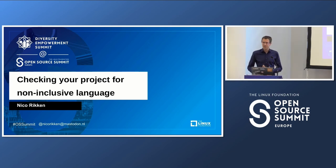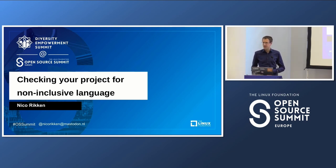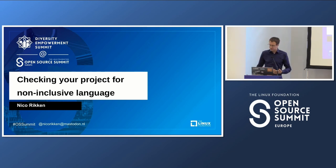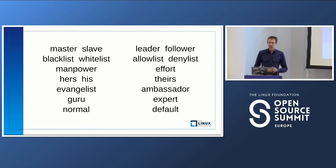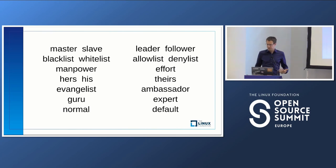One of those structures is language, so it's important to check your project for the presence of non-inclusive language so you can improve it. Probably you're aware of this issue already — Git changed the branch name from master to main. That's one example, but there are many more. I'm not a native English speaker; I'm Dutch.